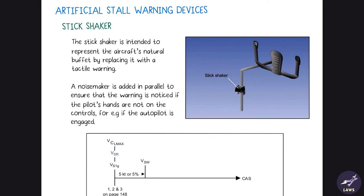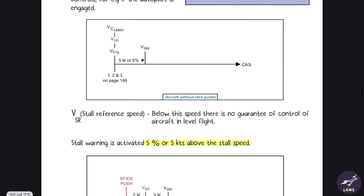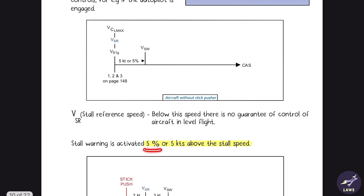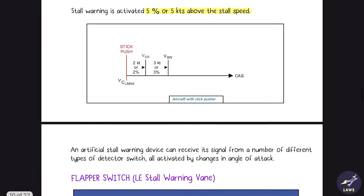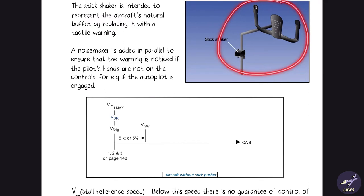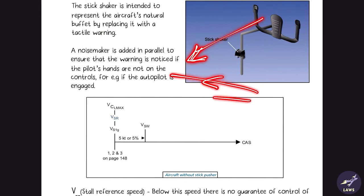Next are artificial stall warning devices. First is the stick shaker, which represents the aircraft's natural buffet by replacing it with a tactile warning — the control column shakes. There is also a noise maker to catch the pilot's attention if hands are not on the controls, such as when on autopilot. The stick shaker is activated at five knots above the stalling speed. In some aircraft, alongside the stick shaker there is a stick pusher, which actually pushes the control column down, pitching the aircraft's nose down.